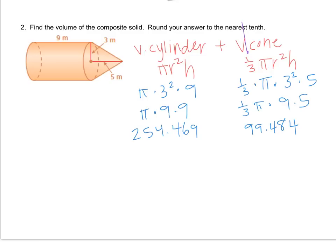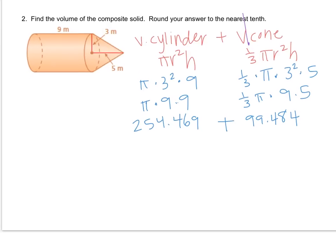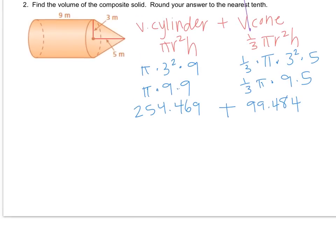And now I will add them together. I have to finally round my answer to the nearest tenth. So let's see: plus 99.484 plus 254.469. And round it to the nearest tenth is 353. Oh, that rounds up. So it actually rounds up to 354.0. Ooh, tricky, tricky. And since it's volume, it's cubic meters.